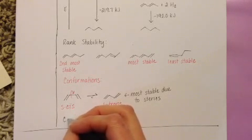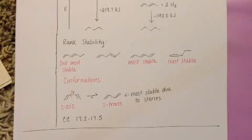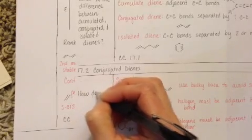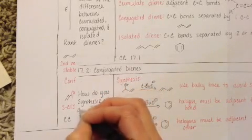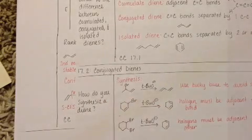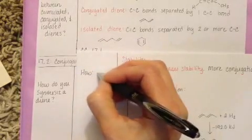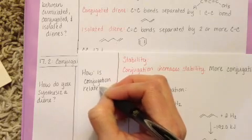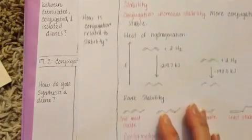You can practice these things with conceptual checkpoints 17.2 through 17.5. And for this section, your study questions are: how do you synthesize a diene? How is conjugation related to stability? And what is the difference between S-cis and S-trans conformations?